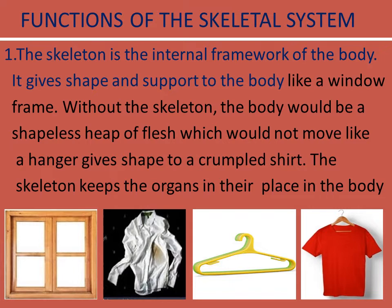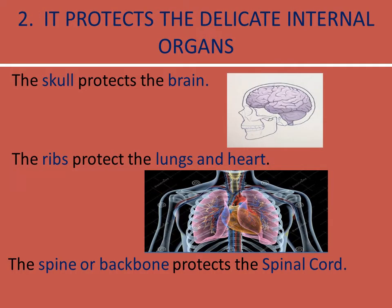Without the skeleton, the body would be a shapeless heap of flesh which would not move. Like a hanger gives shape to a crumpled shirt, the skeleton keeps the organs in their place in the body. It also protects the delicate internal organs. The skull protects the brain, the ribs protect the heart and the lungs, and the spine or backbone protects the spinal cord.